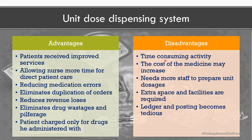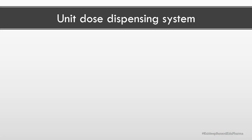The disadvantages of the unit dose dispensing system are: it is a time-consuming activity and the pharmacist has to be engaged in preparation of unit doses. The cost of the medicine may increase because of the packaging. It needs more staff to prepare unit dosages, extra space and facilities are required, and ledger and posting becomes a tedious job.